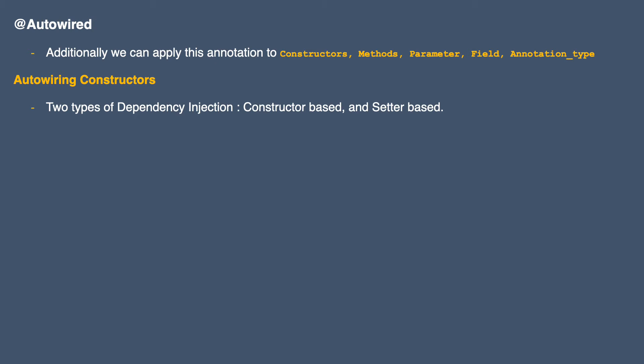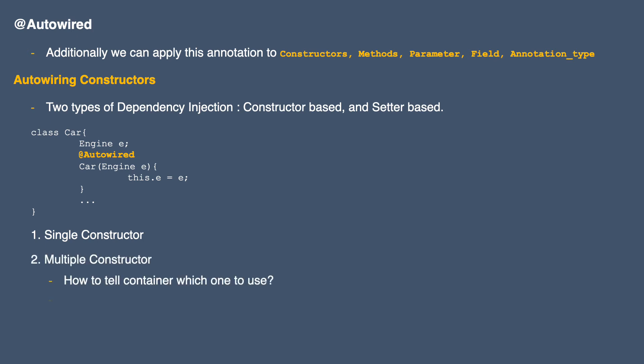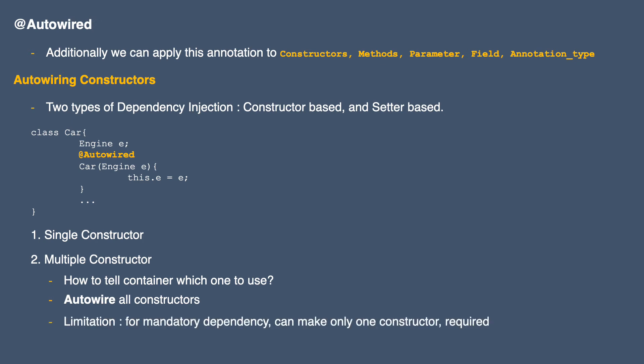For example, in our Car class we have an Engine field and we use the Car constructor to initialize the engine. If we want the Spring container to inject the dependency via the constructor, we can annotate that constructor. Now, if we have only one constructor inside the class, it will always be used and we don't need to worry. But if we have multiple constructors, we need to tell the container which one to use — in that case we can use the autowire annotation on all constructors. However, if we want to make a dependency mandatory, we can only have one constructor marked as required.